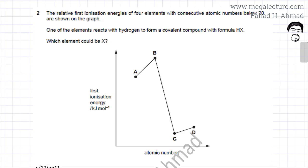The question shows the relative first ionization energies of four elements with consecutive atomic numbers below 20 on a graph. There are four elements with consecutive atomic numbers, and one element reacts with hydrogen to form a covalent compound with the formula HX, which could be something like HCl.